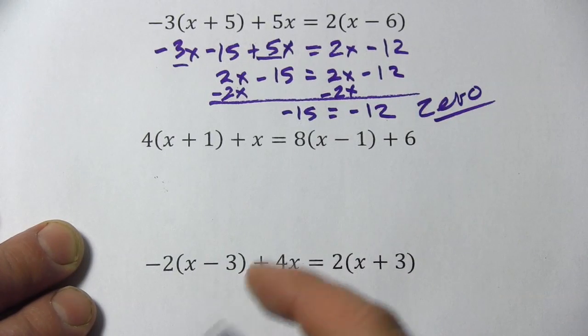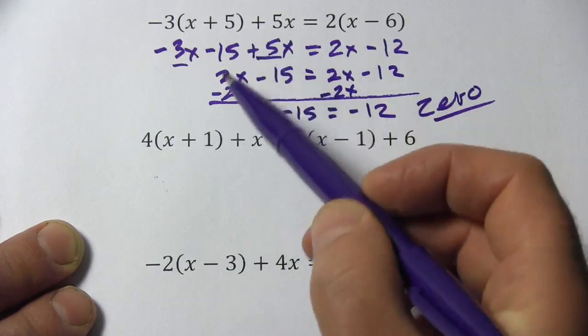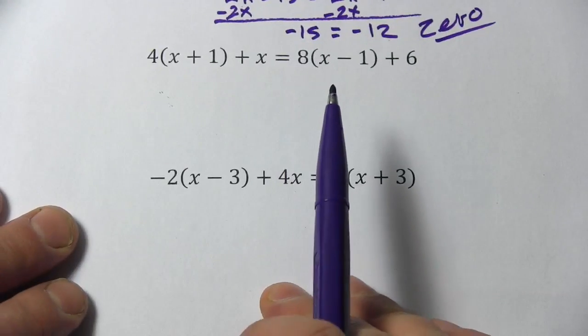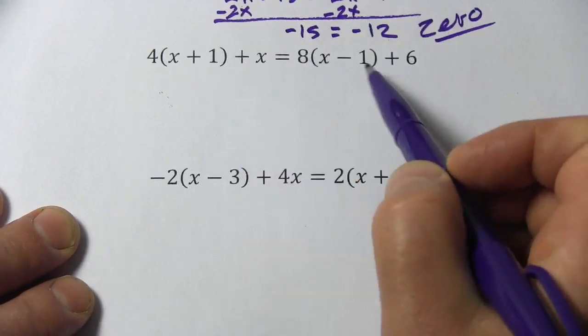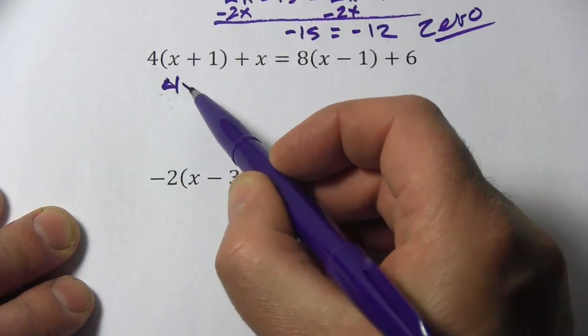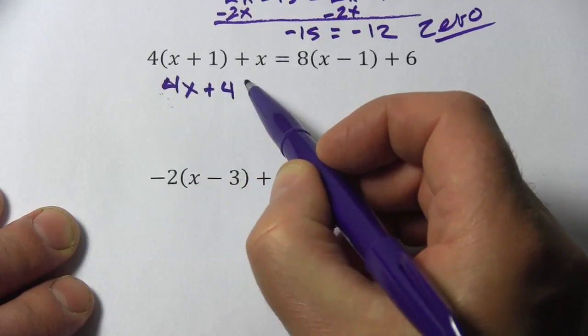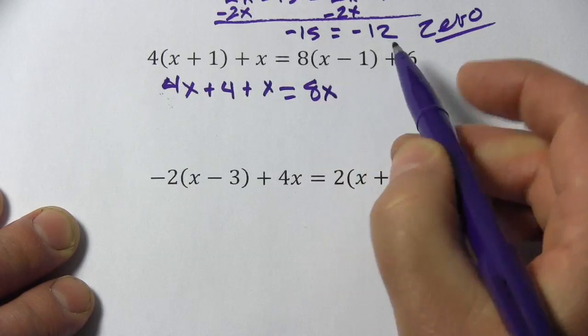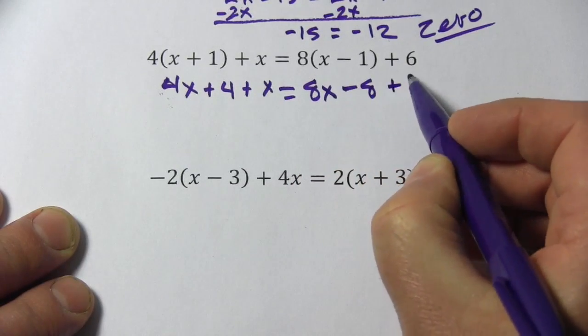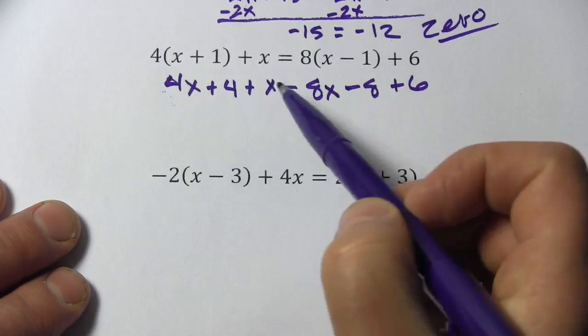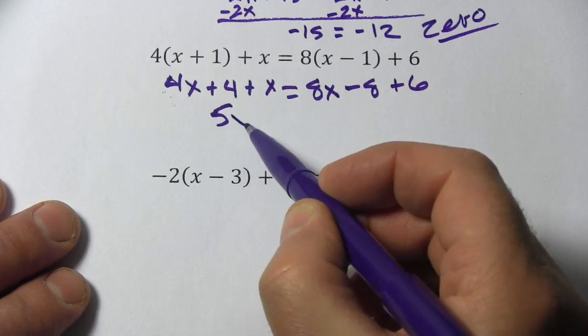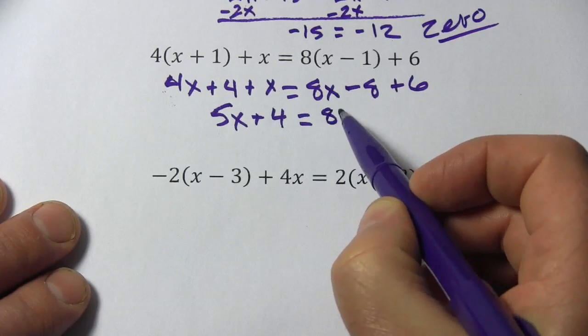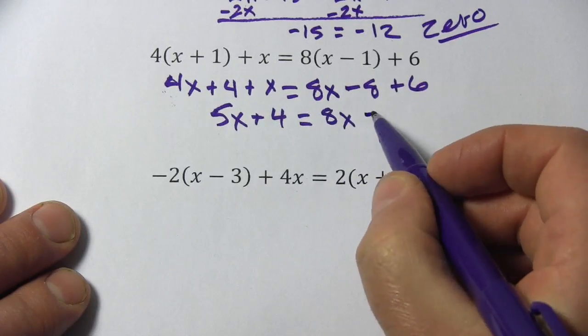There are no solutions to this. There's no number you could put in for x up here that would make this work out. Alright, let's try the next one. Again, we'll start with distribution. 4 times x is 4x. 4 times 1 is 4. We have plus x. 8 times x is 8x. 8 times negative 1 is minus 8 plus 6. Let's combine our like terms. 4x and x is 5x. Then we have our plus 4. 8x, there's nothing to combine there. And then negative 8 plus 6 is negative 2.